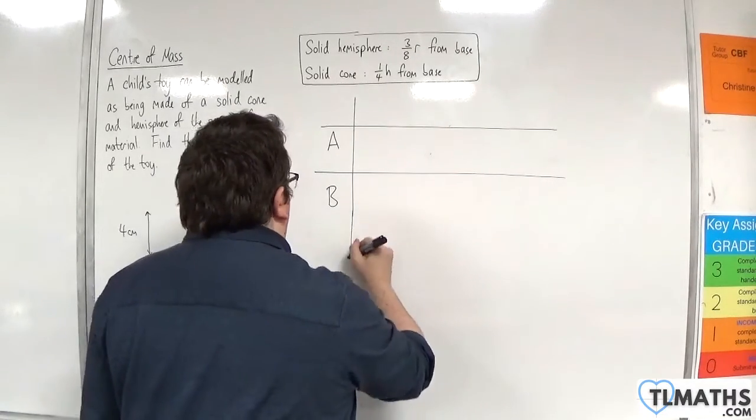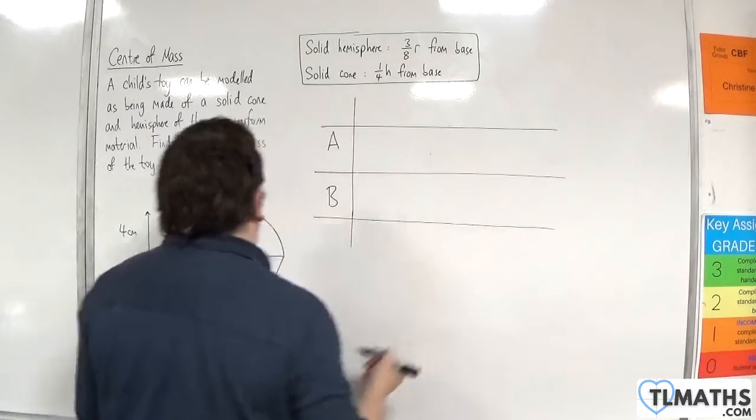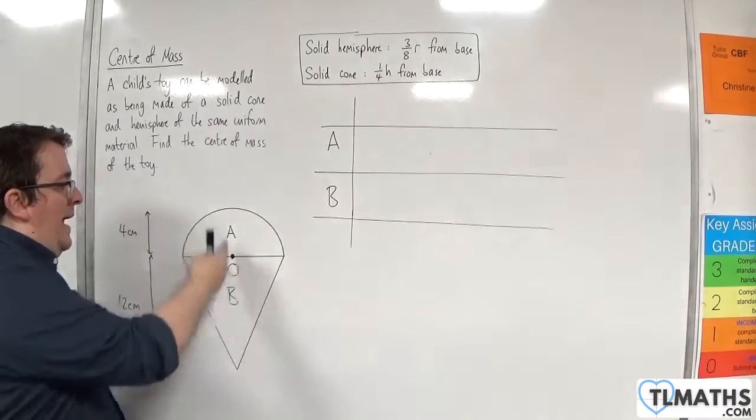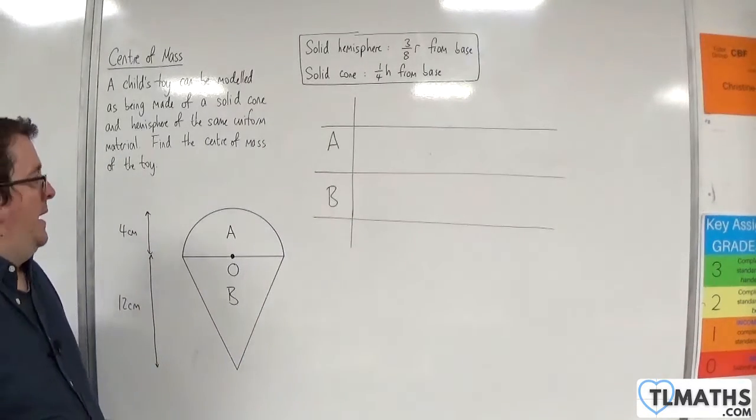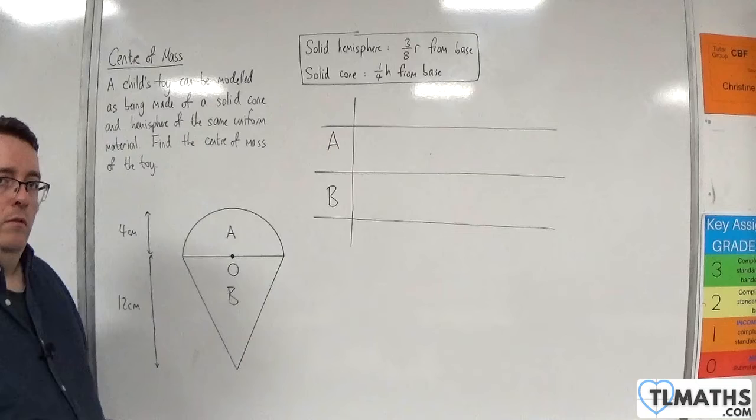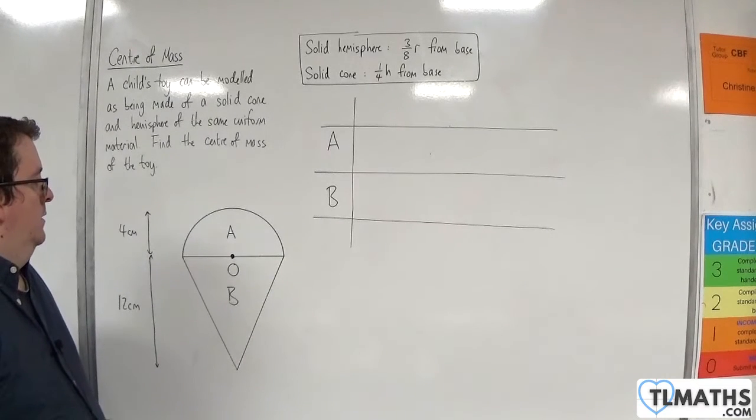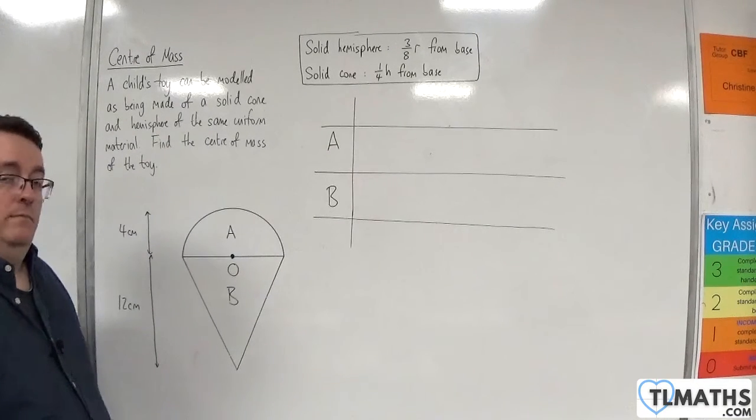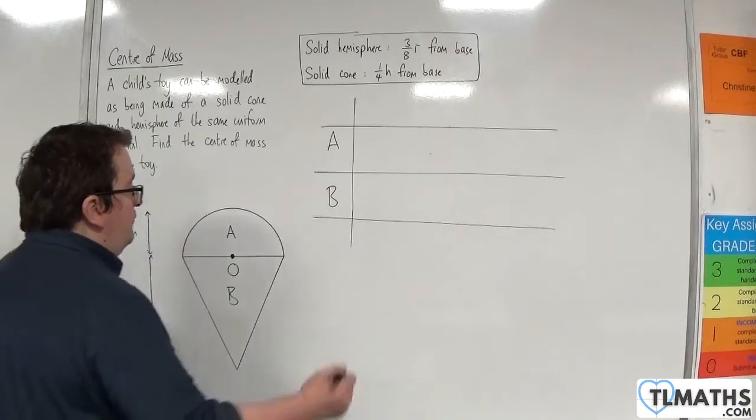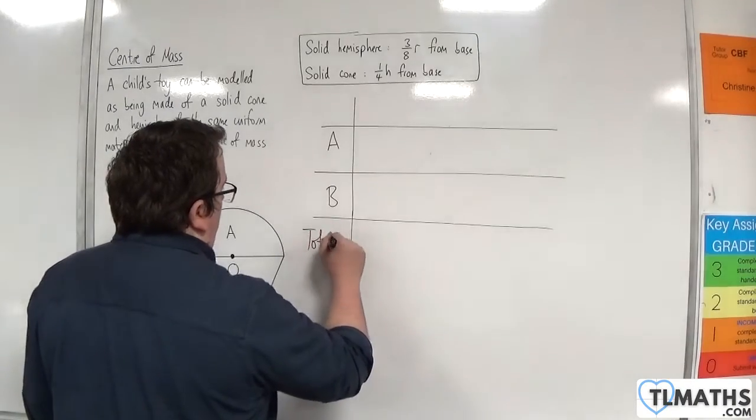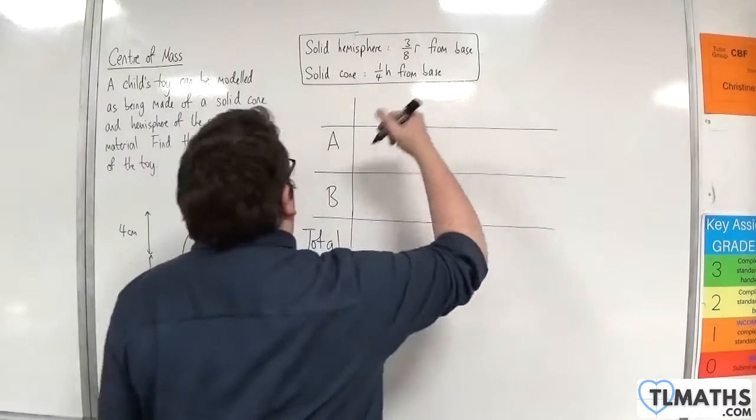You might also argue that actually I don't need to consider X, do I? Because X would be 0 because of the symmetry of the shape. So, yeah, I'll ignore X as well. Let's go with that. So we'll just do the Y-coordinate.